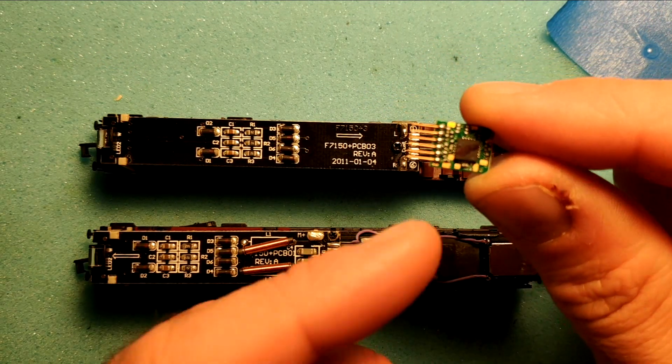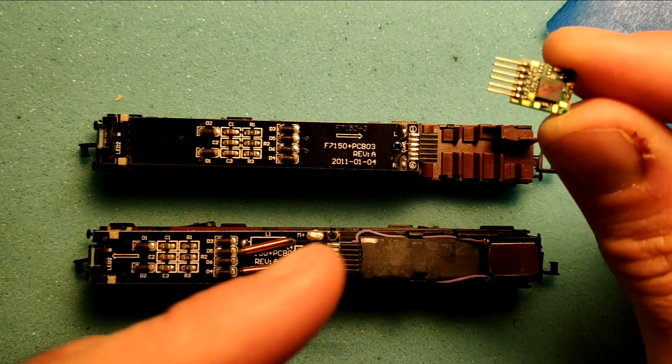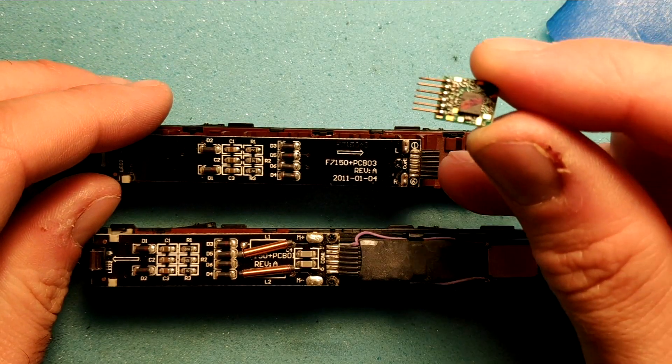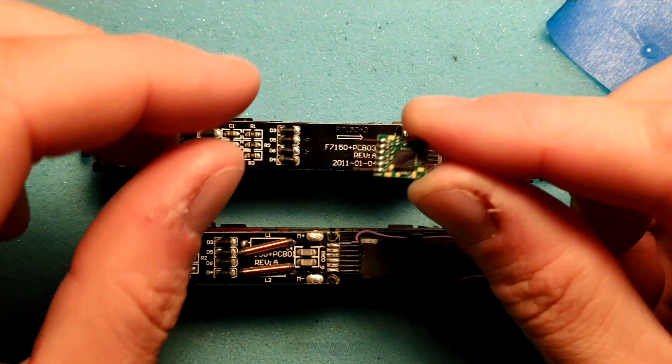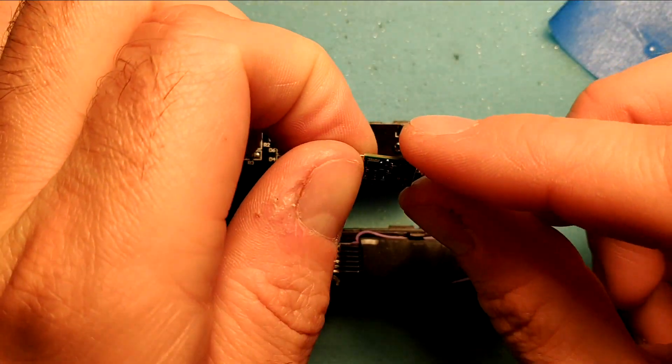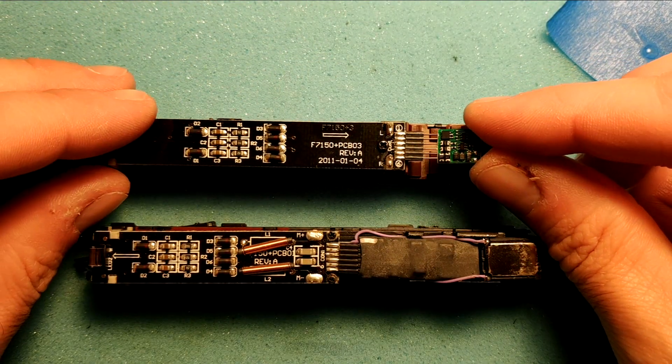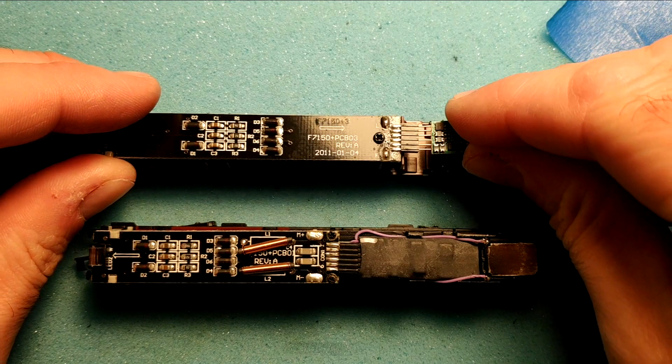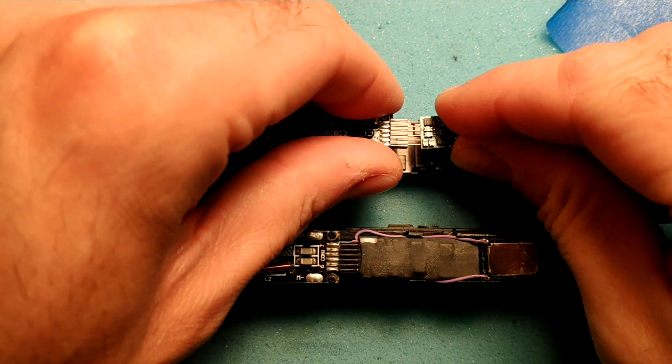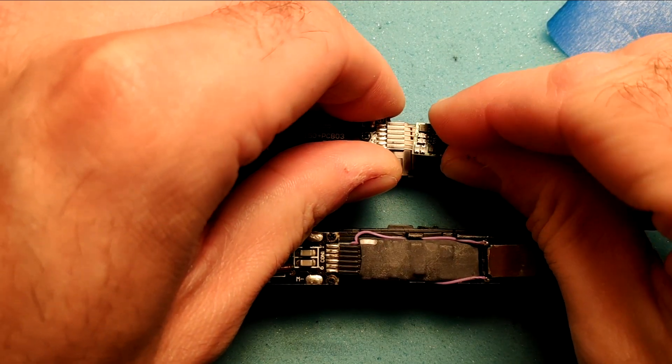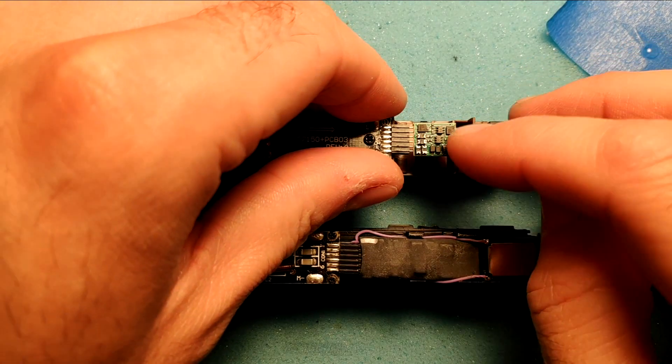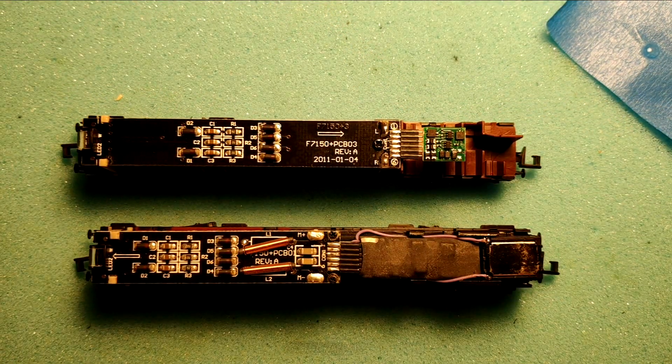So here we go, it's a little Gaugemaster chip. Now this pin here is number one, and on our chipboard there, number one is over this side. So I need to turn it around. So pin one is here, and pin one is there. And this will go in like this. Now, what I've done off screen is I've already set this chip up. Let's go over to the track.